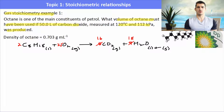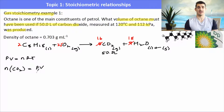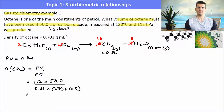First, work out the number of moles of CO2 using PV = nRT. So n(CO2) = PV/RT. Pressure = 112 kPa, volume = 50 dm³, R = 8.31, T = 120 + 273 = 393 K. That gives us 1.71 moles of carbon dioxide.